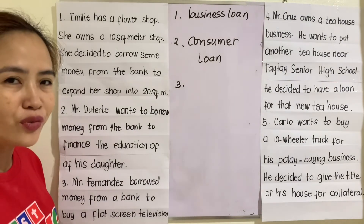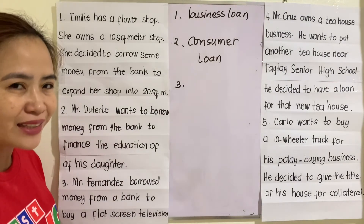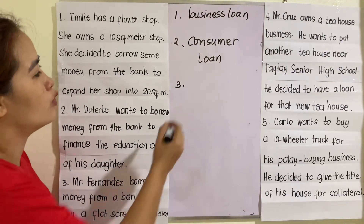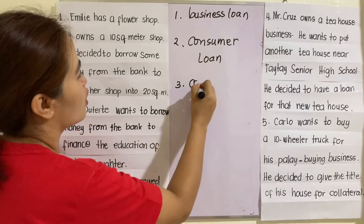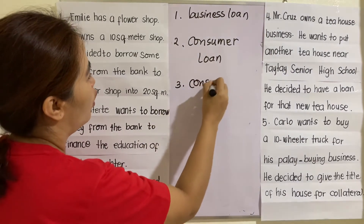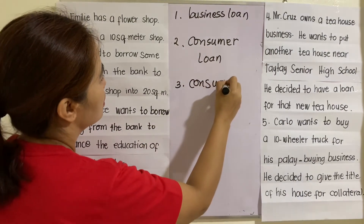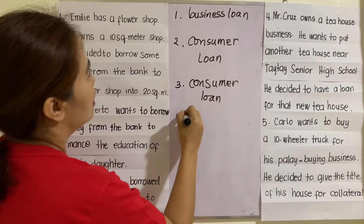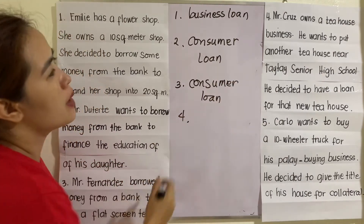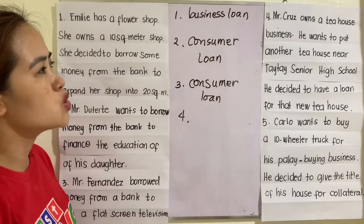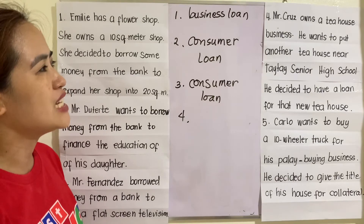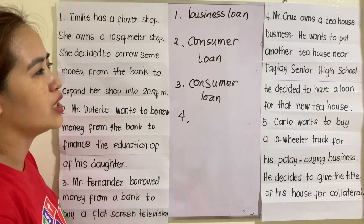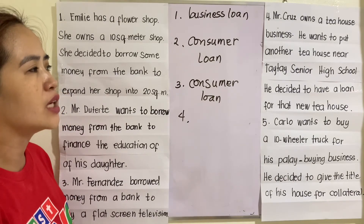Number three: Mr. Fernandez borrowed money from a bank to buy a flat screen television. What kind of loan is that? This is for personal use, therefore this is a consumer loan.